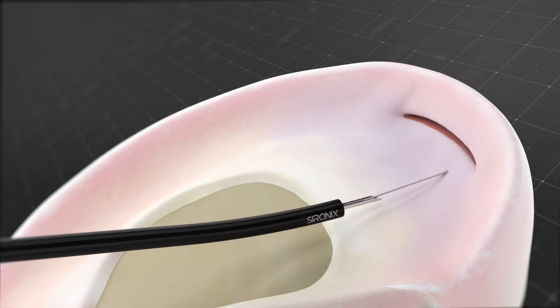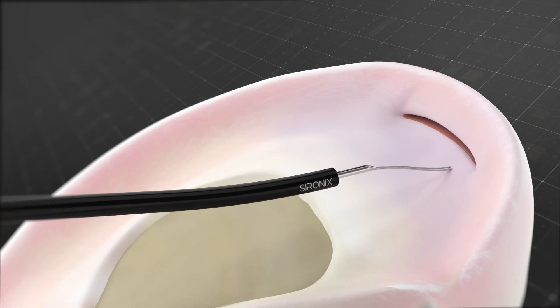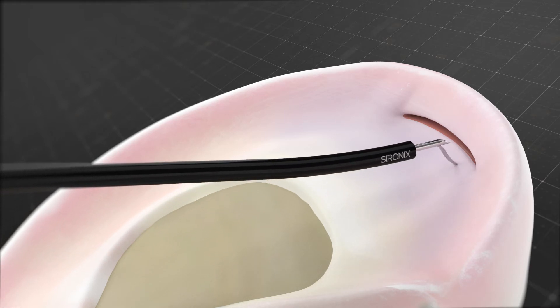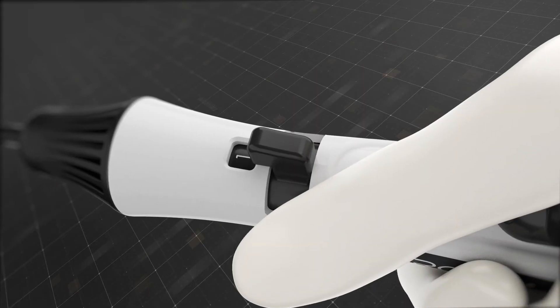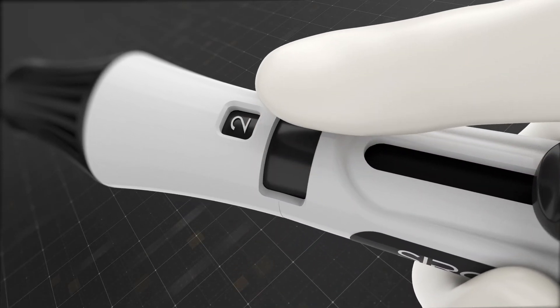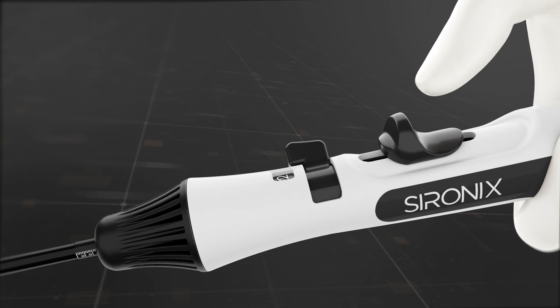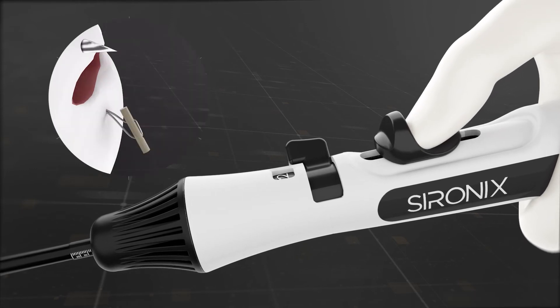To prepare for the second implant, retract the needle and position it at the next desired point until the depth control tube touches the meniscus. Then turn the safety knob to active position two and advance the implant using the deployment knob until there's an audible click.